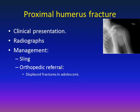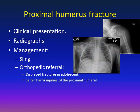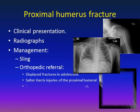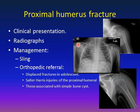Indications for orthopedic referral for proximal humerus fracture: first, displaced fracture in adolescents — adolescents have less growth remaining and therefore less remodeling capacity, so a displaced fracture in an adolescent should be referred for possible intervention. Second, Salter-Harris injuries of the proximal humerus. Look at this X-ray: on the left side, the epiphysis lies away from the metaphysis — this is a fracture through the growth plate with separation of the epiphysis with part of the metaphysis, making it a Salter-Harris type II.